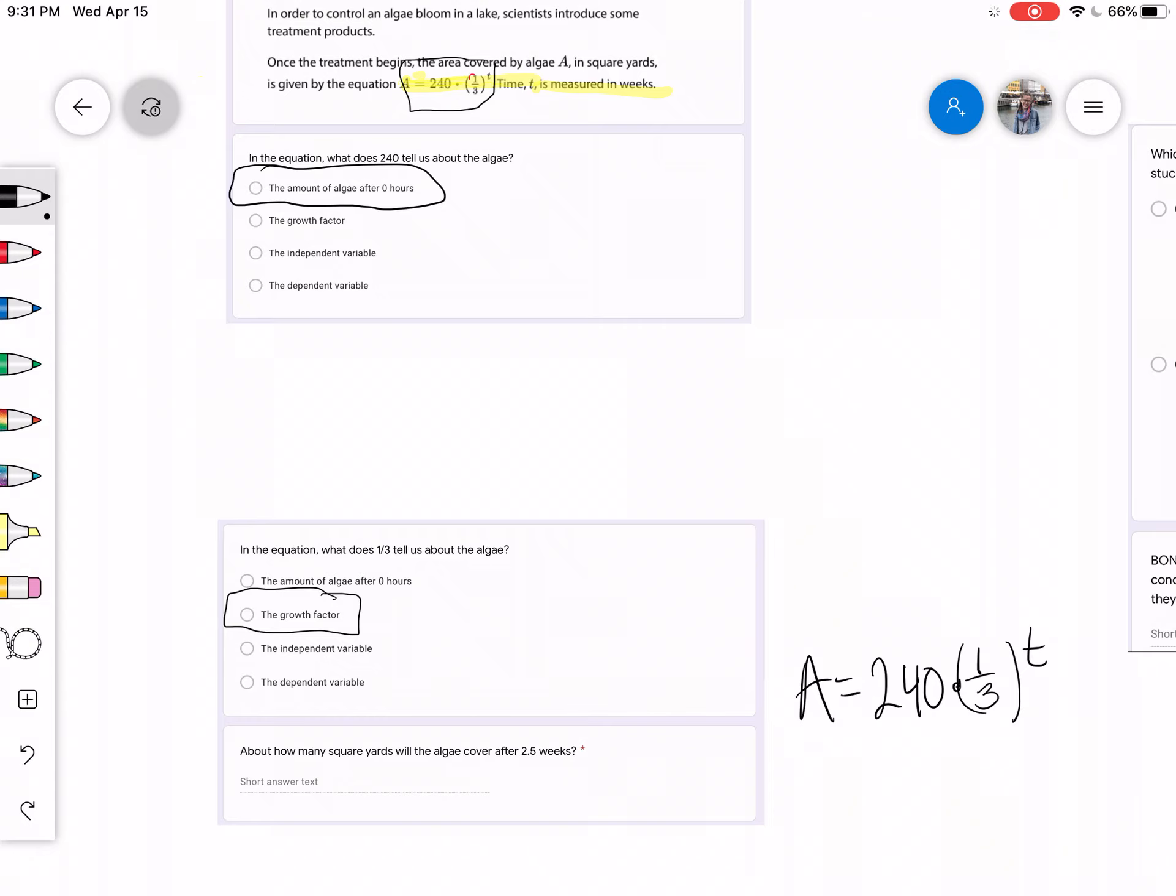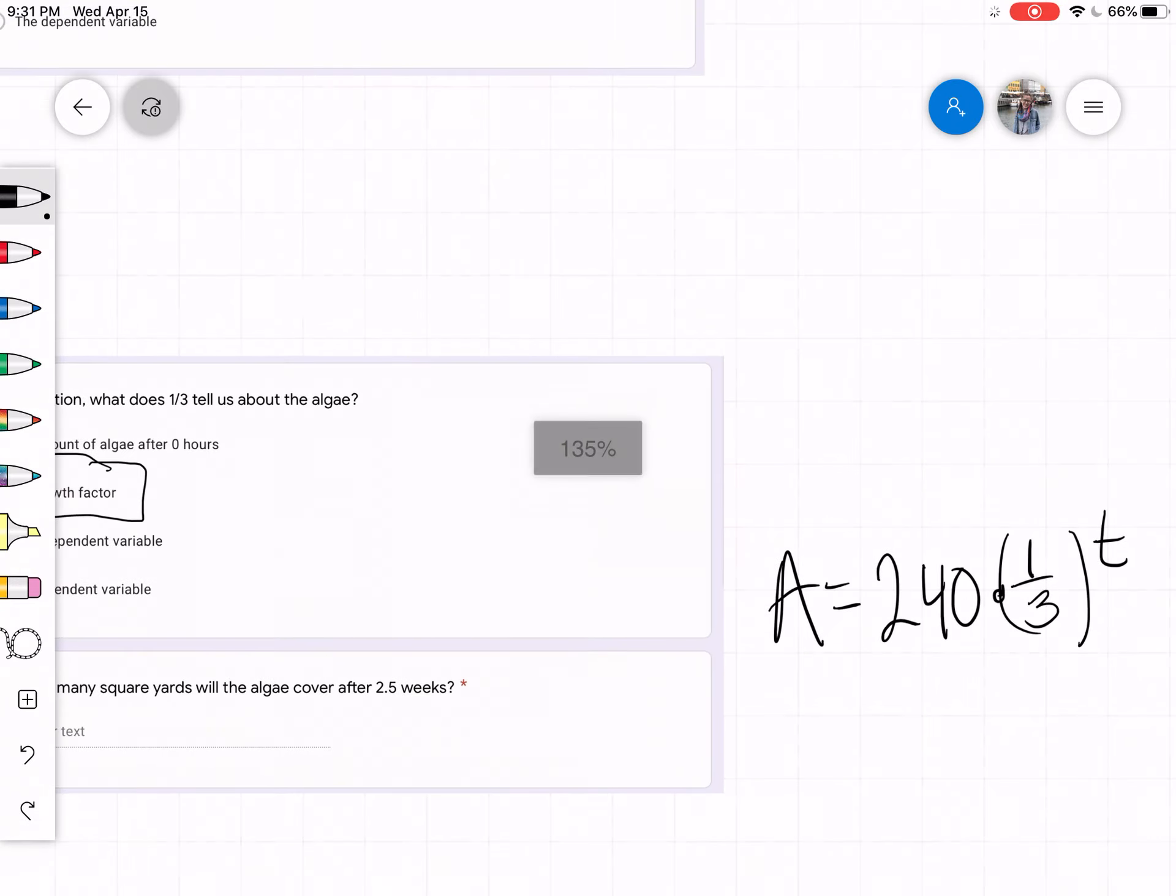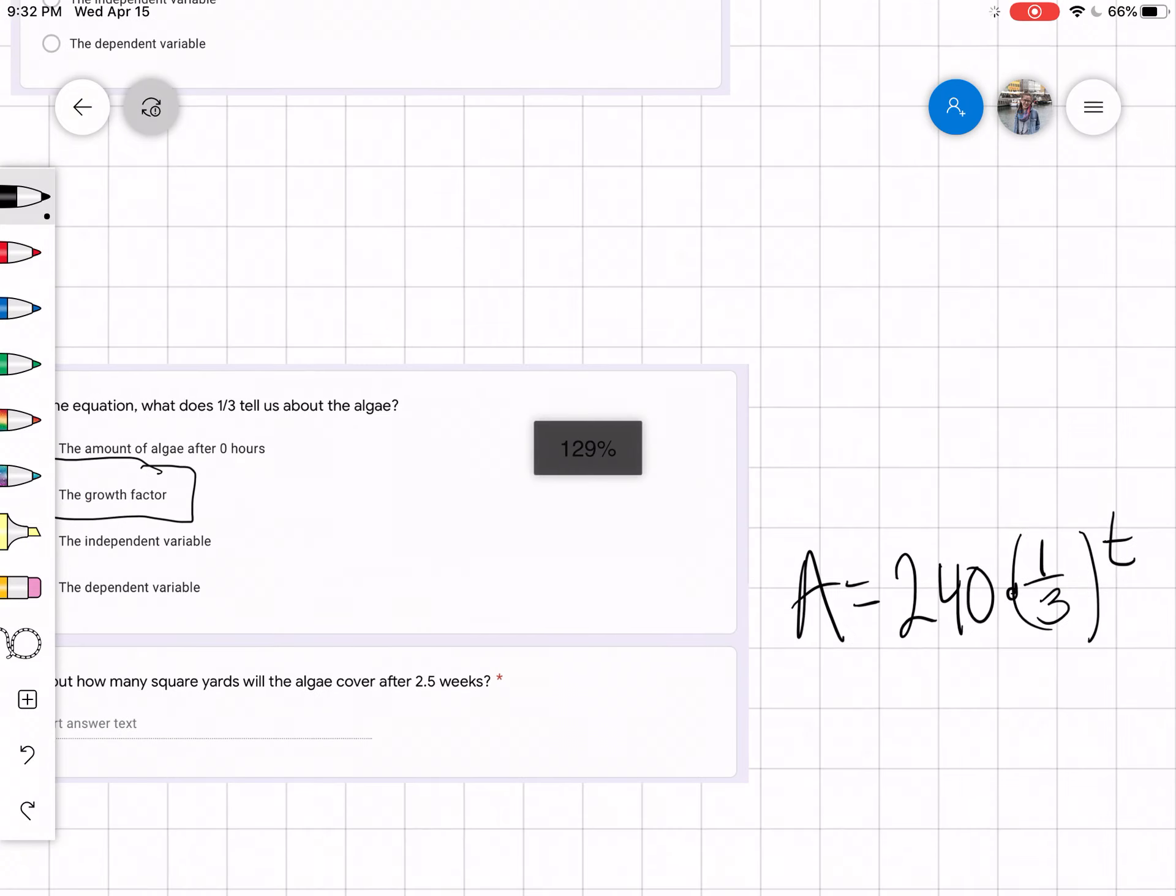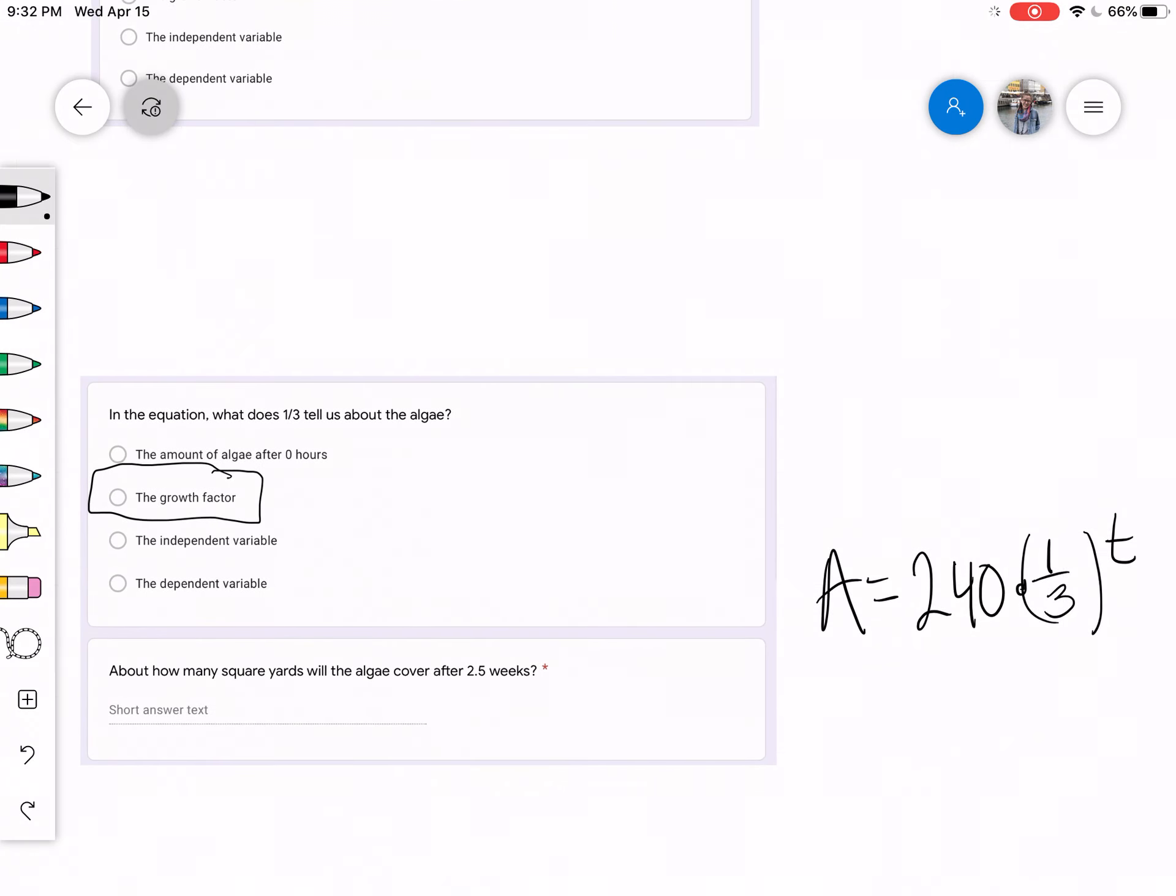Now we need to think about, if we're trying to figure out how many square yards the algae will cover in 2.5 weeks, we need to think about where can we substitute this 2.5 weeks in for? Let's think about, what did our variable A mean, and what did our variable T mean? Well our variable A meant our area. That seems like what we're trying to find, how many square yards. Our T was our time in weeks.